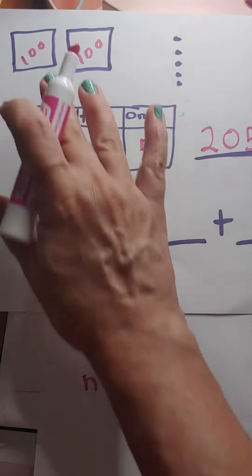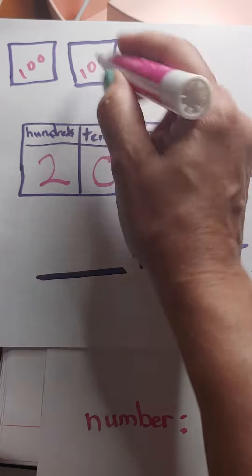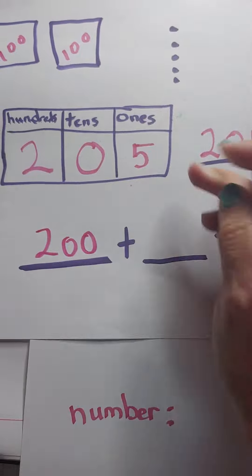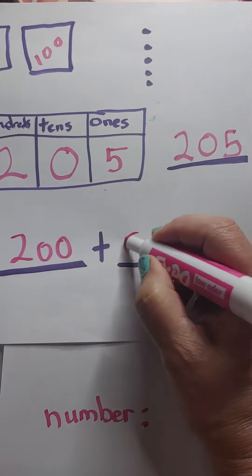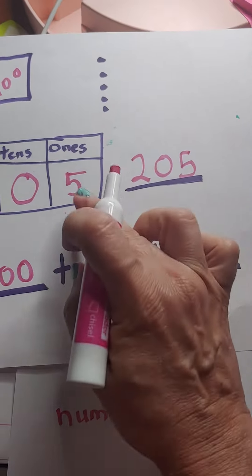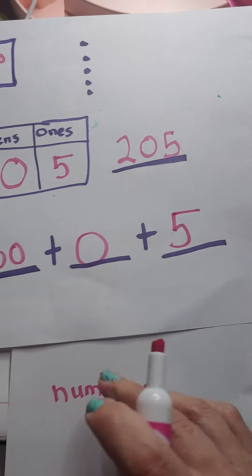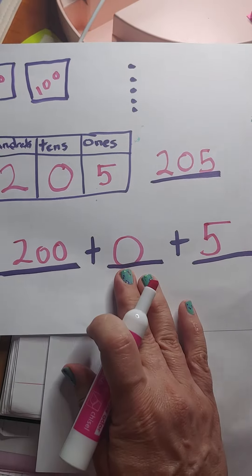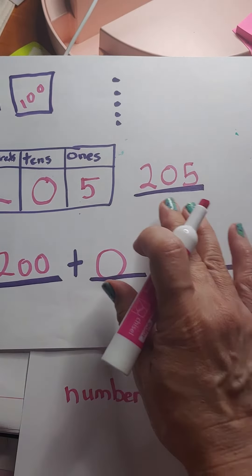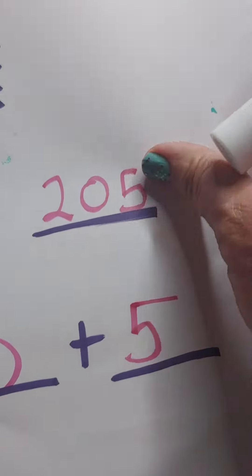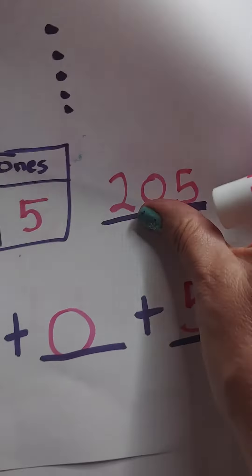Expanded form. Very important. First, write the hundreds part. Two hundred. Again, no tens. We're just going to say plus zero. And now plus your ones. And that's just little old five. Two hundred plus zero tens plus five is two hundred five. That's our number there. Two hundred five.